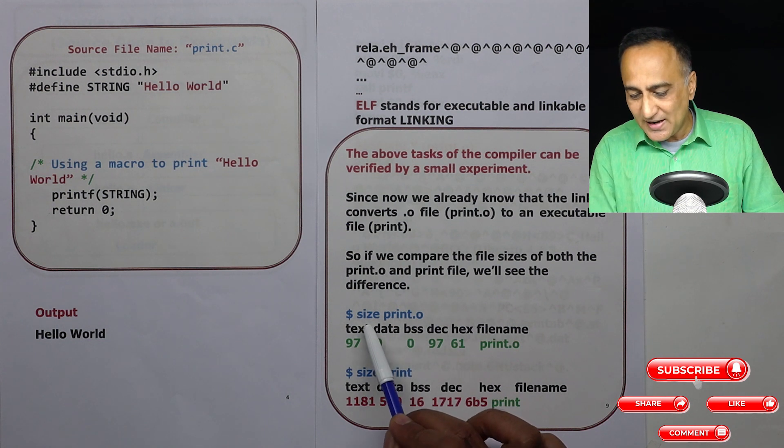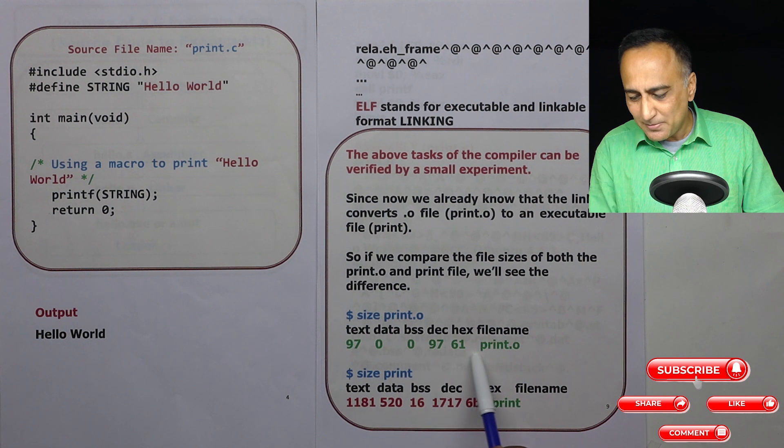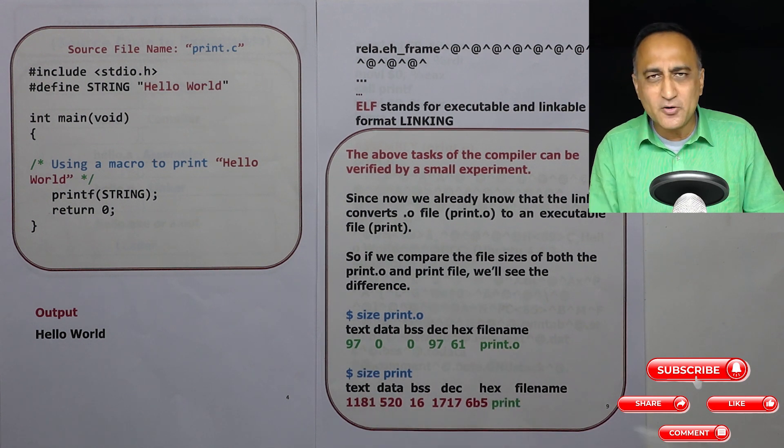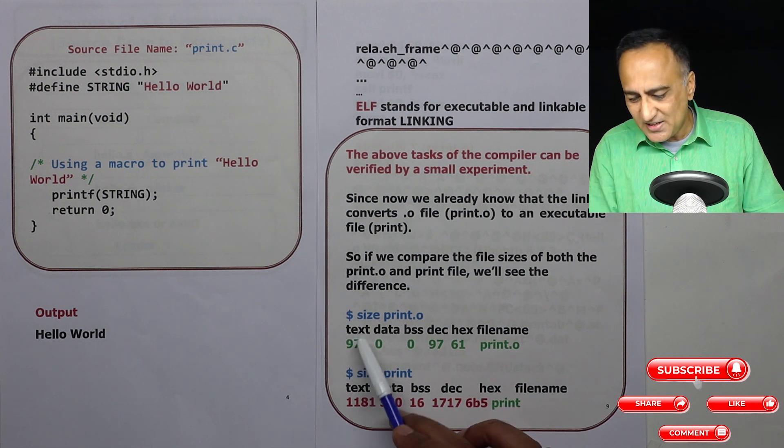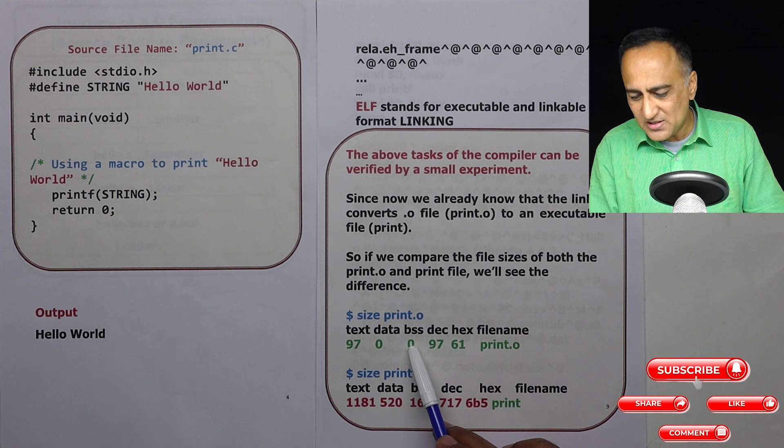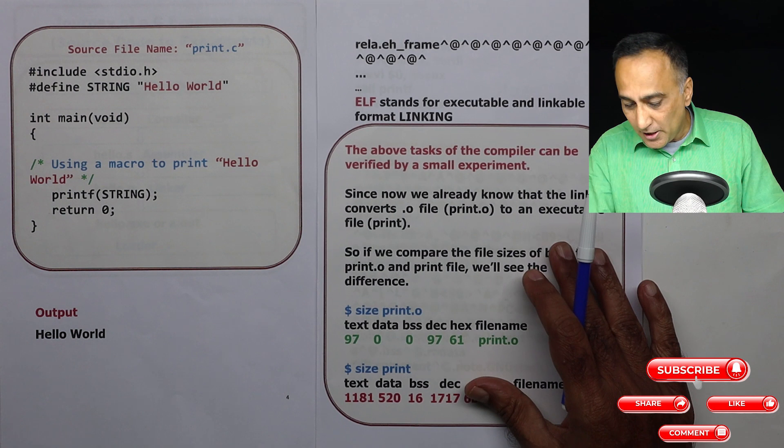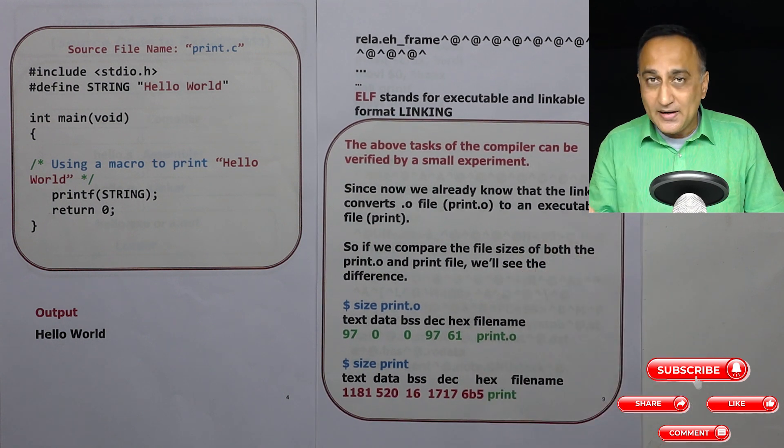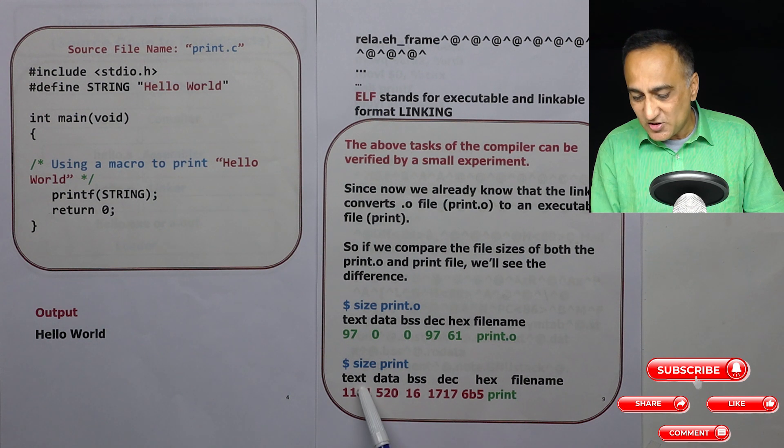So first what I am doing is on Linux I am using the size print.o. If you see these numbers this is showing you the size of print.o. It's a very small file because all that you have done is just the message hello world. So it's 97 is text, data is 0, BSS is 0, 97 in decimal and hexadecimal it is 61.